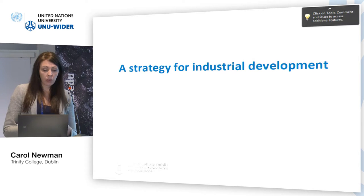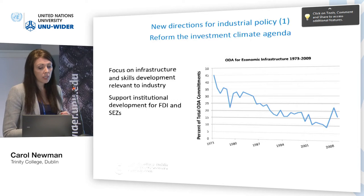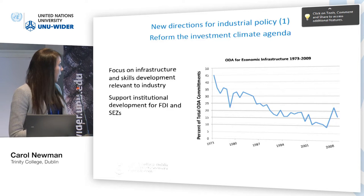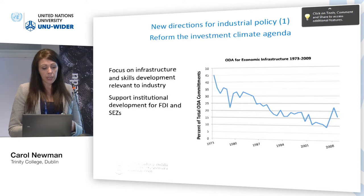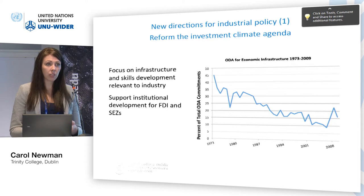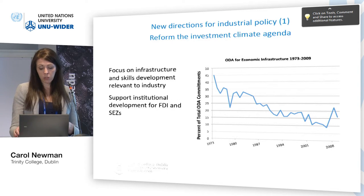On foot of this evidence, we come up with a strategy for industrial development. The first relates to the need to reform the investment climate agenda — there is a graph about ODA for economic infrastructure and how it has declined over time. The infrastructural gap was identified as a significant issue in many of our country cases, and investment of ODA into infrastructure is much needed. Also important is support for institutional development around foreign direct investment: it's not enough to attract FDI firms — they must be linked into the local economy. Similarly, a number of special economic zones in sub-Saharan Africa have failed and are ineffective, so reform of how these zones operate is needed.